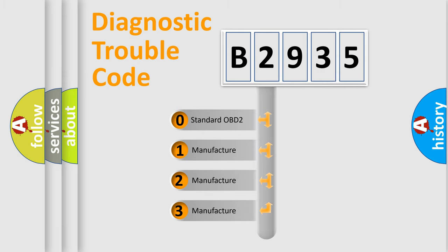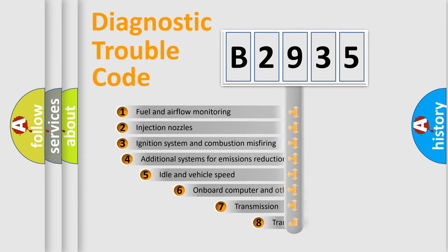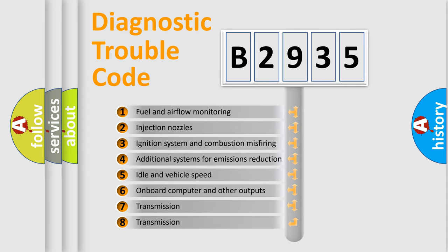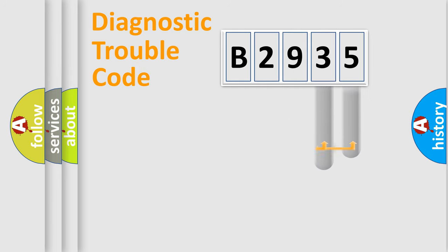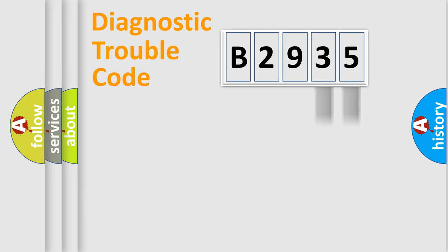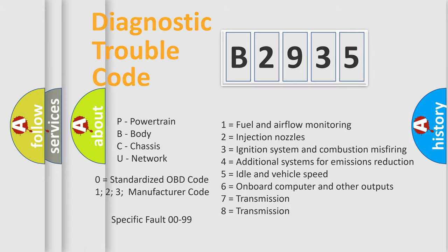If the second character is expressed as zero, it is a standardized error. In the case of numbers 1, 2, or 3, it is a more specific, manufacturer-specific error expression. The third character specifies a subset of errors. This distribution is valid only for the standardized DTC code, and only the last two characters define the specific fault of the group — but this division is valid only when the second character is zero.